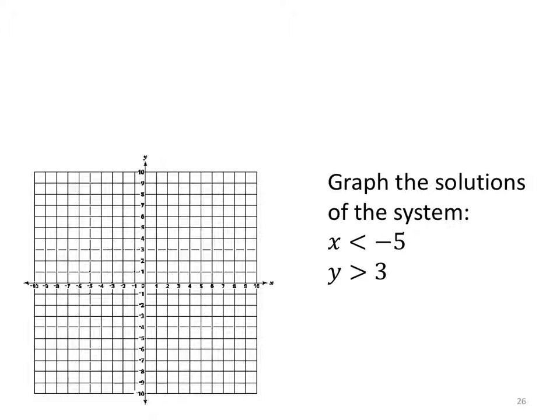Let's go ahead and do this one too. So we got x is less than negative 5, so let's look at the equation x equals negative 5. Okay, so we're just going to graph that line, and then we'll still test the point.